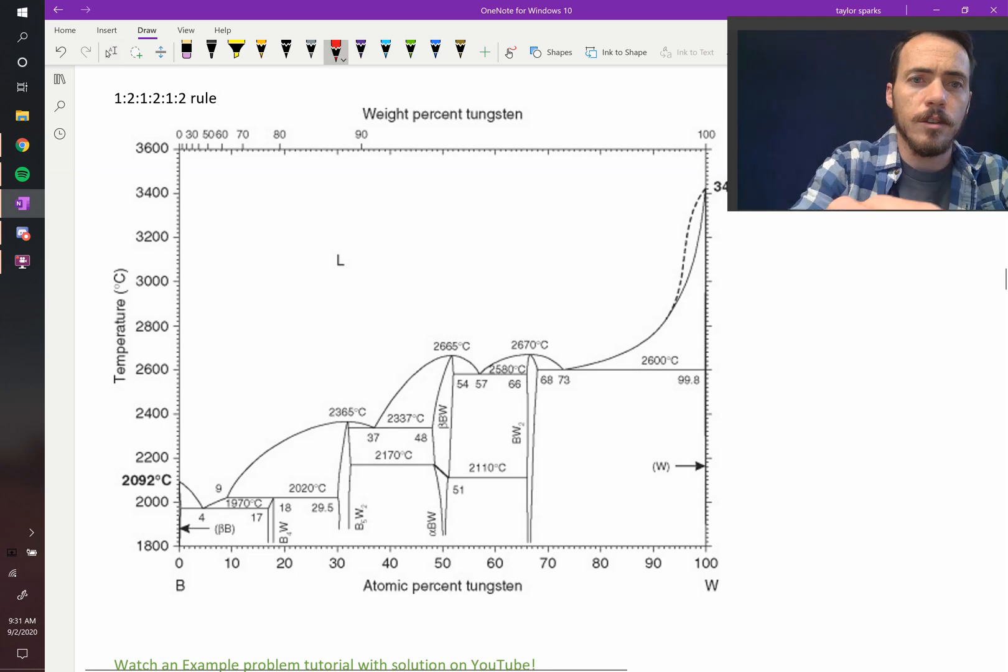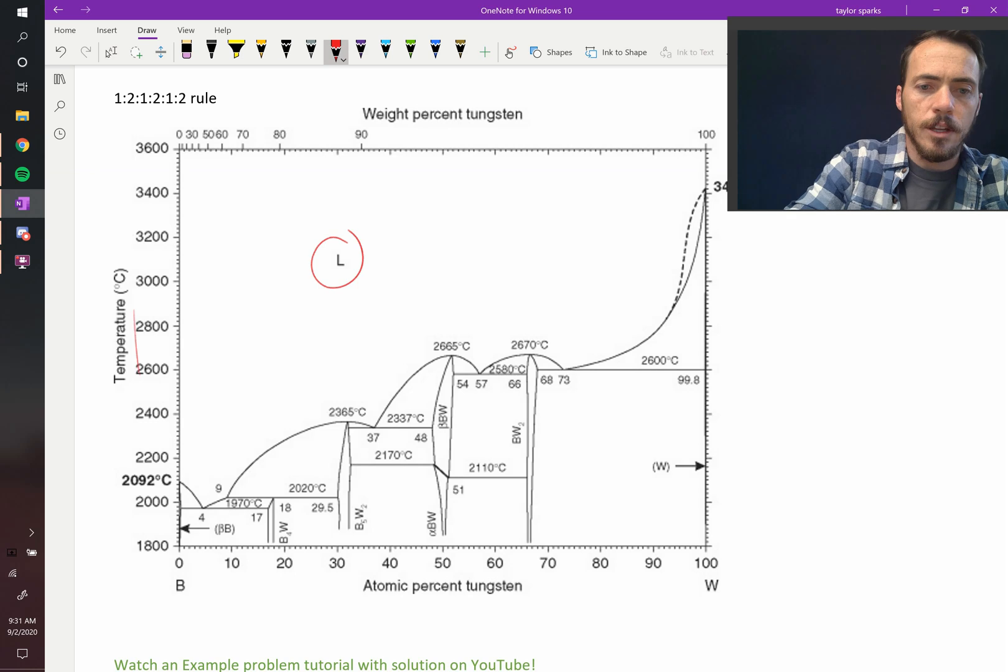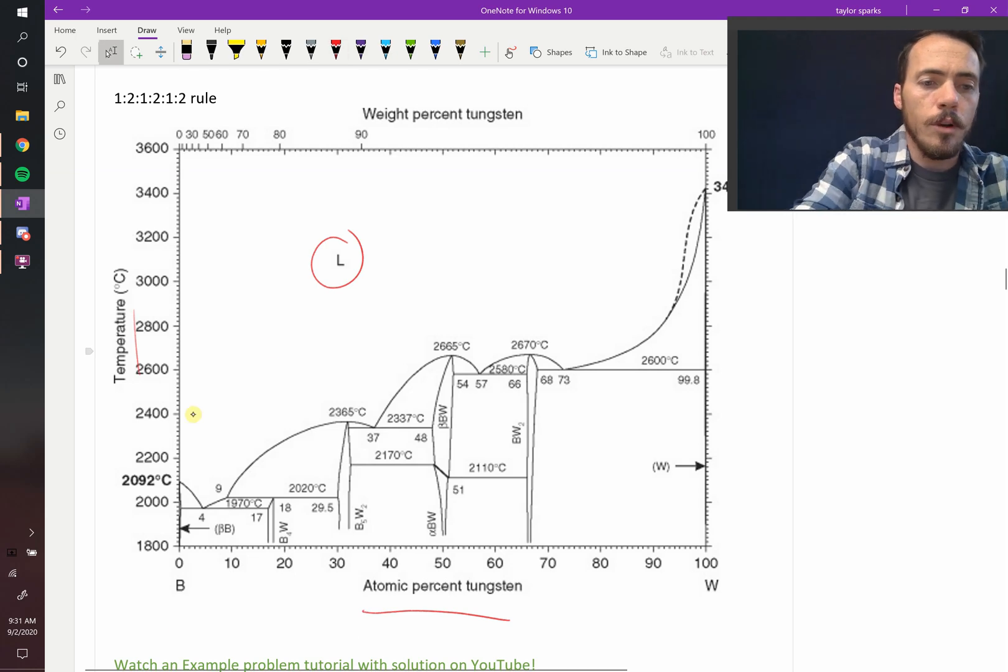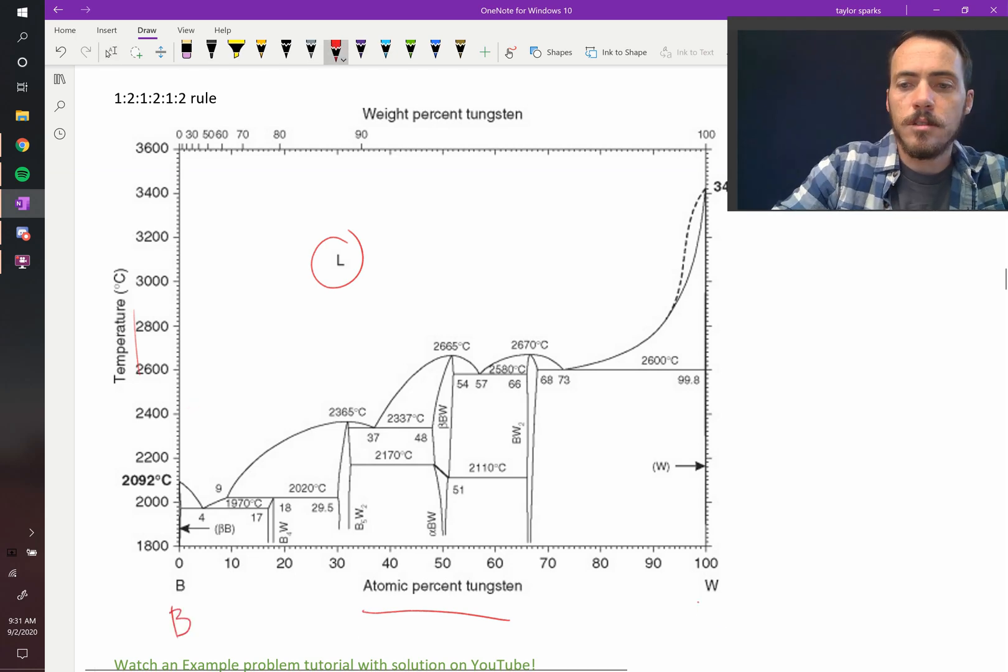So you'll notice lots of things. For example, they put the liquid up here. We know that it's temperature plotted against the atomic percent of tungsten, so this time it's not the weight fraction, it's the atomic or the mole percent. You've got pure boron over here, and then you've got tungsten over here.